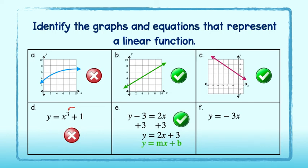Lastly, take a look at f. The degree of each variable is 1. However, it does not appear to be in slope-intercept form. In this case, we can manipulate the equation by adding 0 to the end. We did not change the value of the equation and it is now in slope-intercept form. It is a linear function.